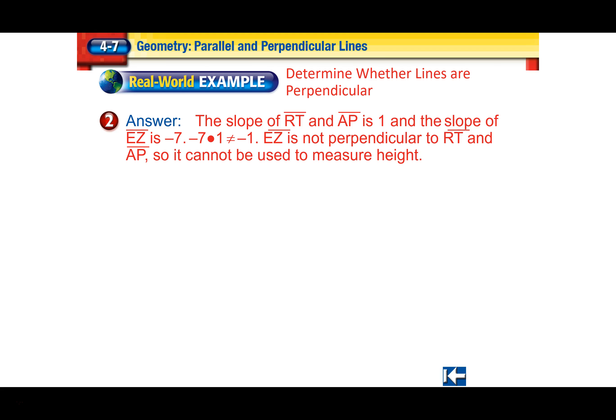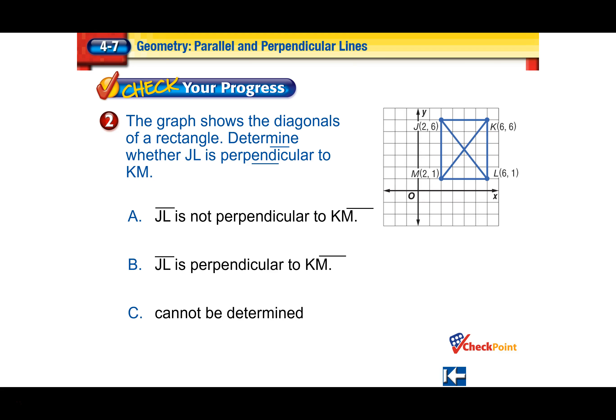The slope of RT and AP is 1, and the slope of EZ is negative 7. These two multiplied together do not equal negative 1, therefore EZ is not perpendicular to the bases and cannot be used to measure the height of the trapezoid. Pause this and give it a shot.